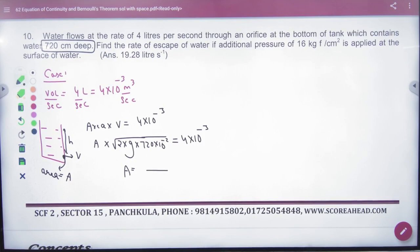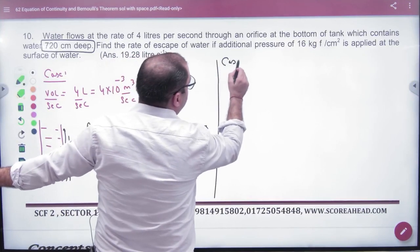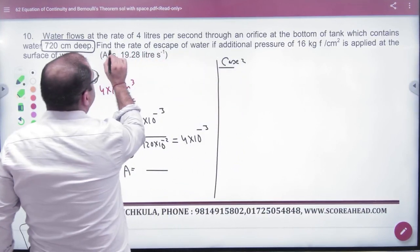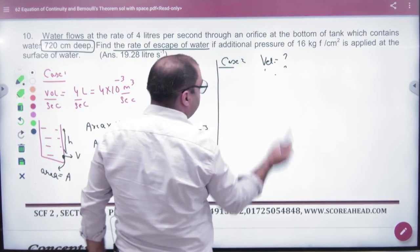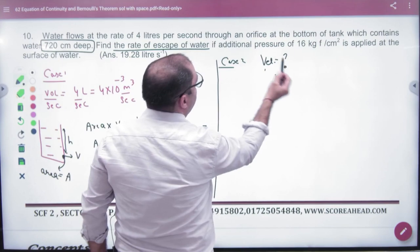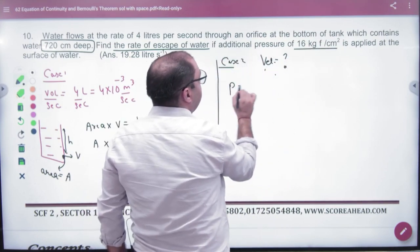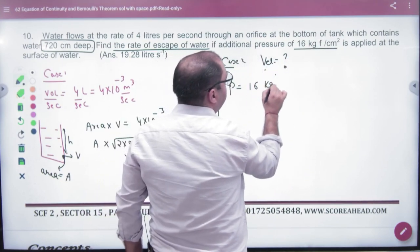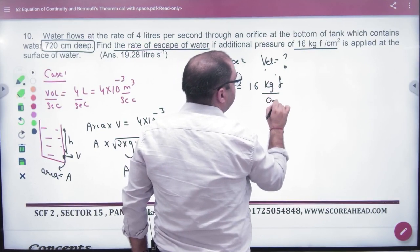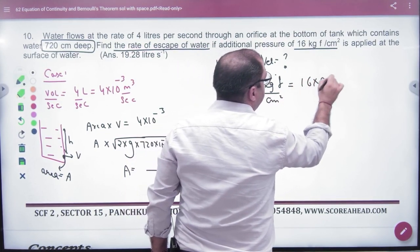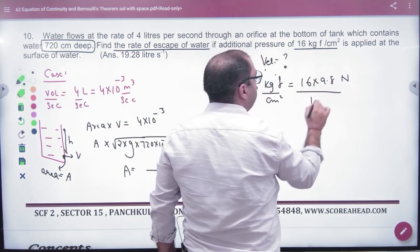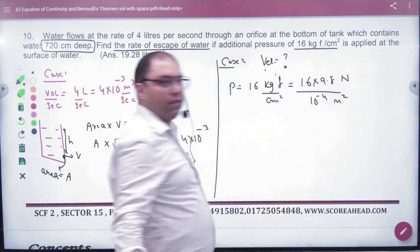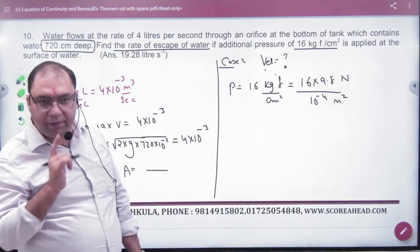Now he is saying actual question, this is not area. Case number 2, actual case number 2 is find rate of escape of water. Now what is velocity? Velocity value if we add additional pressure. How much we add? 16 kg force centimeter square, 16 into 9.8 Newton centimeter square, 10 to power minus 4 meter square. Pressure.